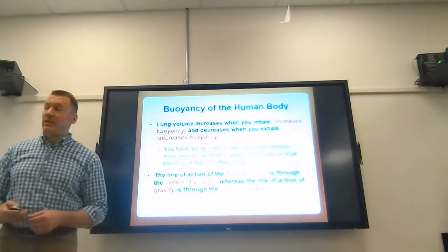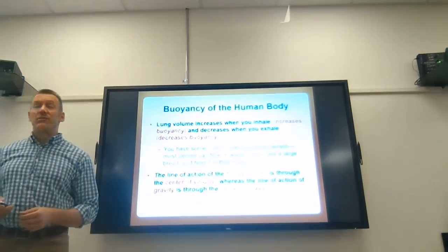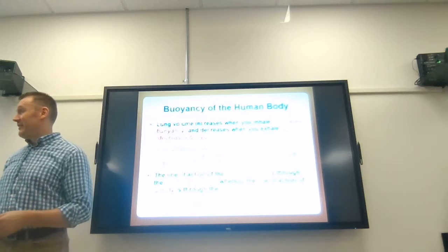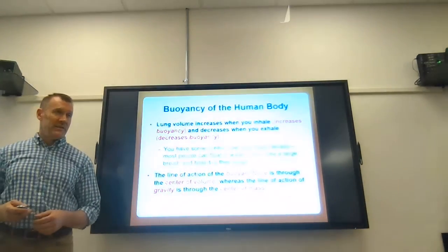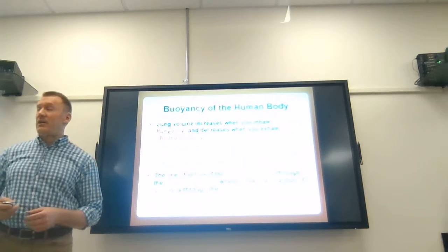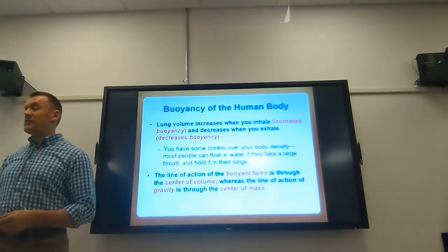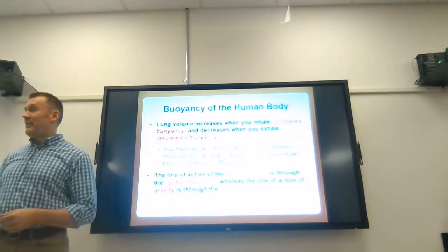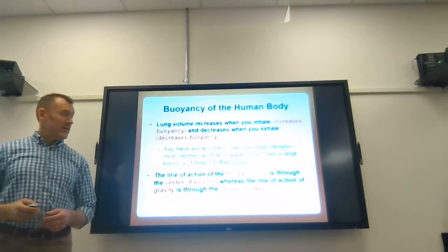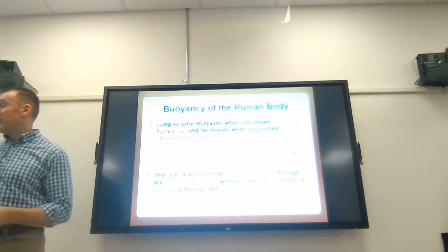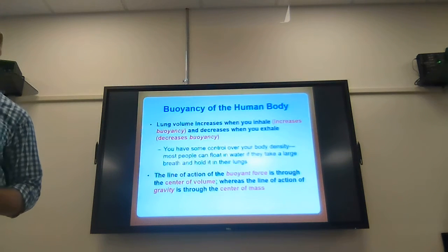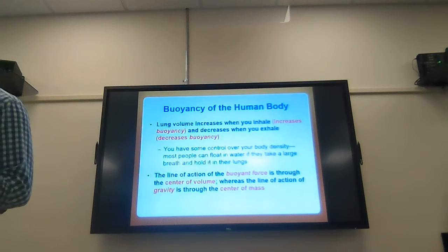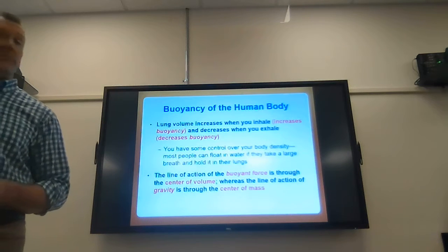These two forces act through different points. The buoyant force acts through the center of volume — the center of volume in your body is where you have the most air, which is obviously your lungs. That's where the buoyant force acts, upward. The force of gravity acts through the center of mass. The center of mass is the point around which you have the most mass of your body concentrated. So gravity acts through the center of mass, whereas the buoyant force acts through the center of volume.